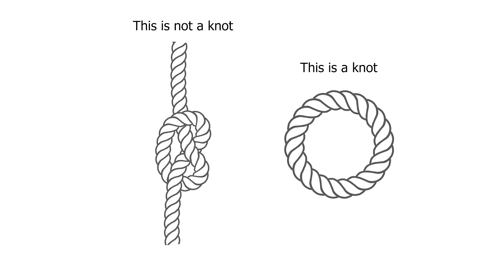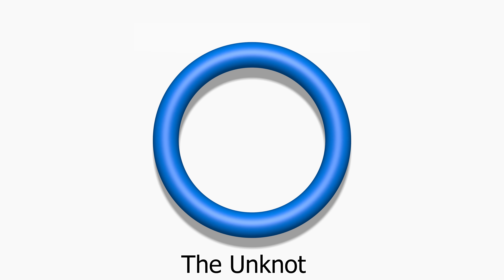In mathematics, a knot is a string that forms a closed loop. So if your ends don't meet, it's not a knot. The simplest form of a knot is called an unknot — this is just a simple ring. Now you can arrange an unknot in different ways so that it has different numbers of crossings.